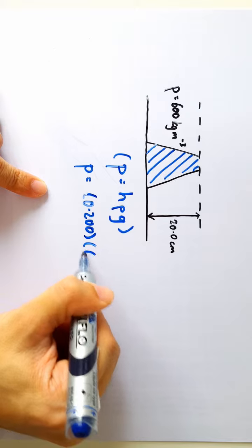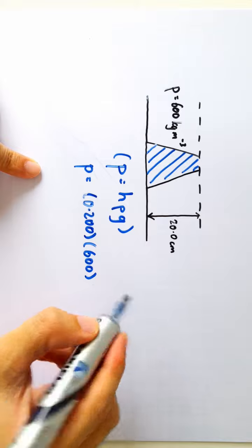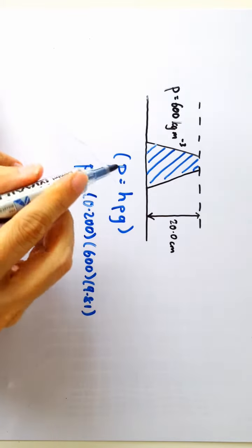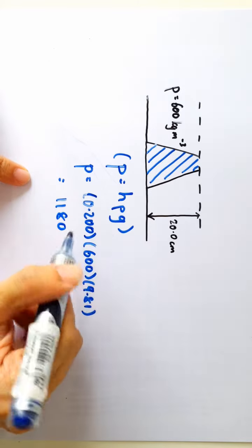Density of the fluid of this liquid we were told is 600 kg per meter cube and of course G is 9.81. And this will give us the answer 1180 pascals.